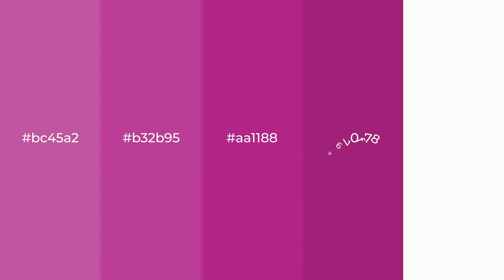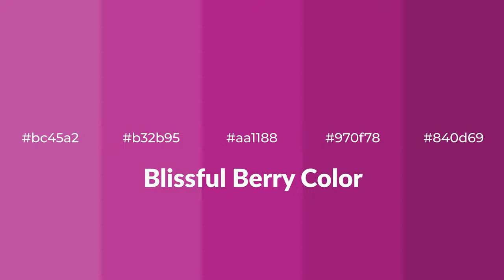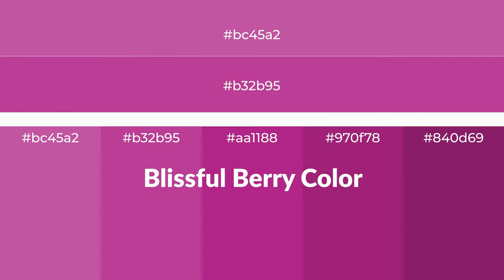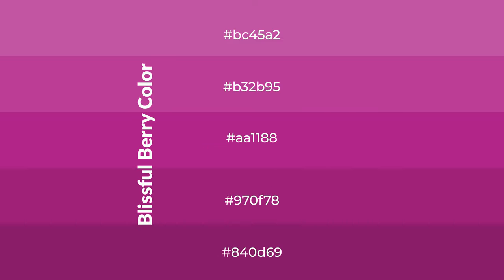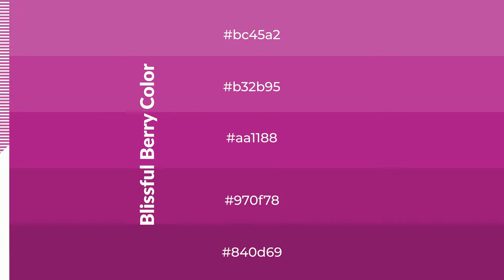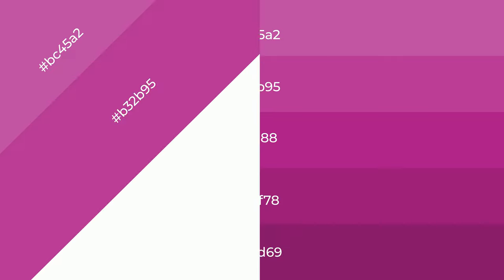Warm shades of Blissful Berry color with red hue for your next project. To generate tints of a color, we add white to the color. Tints create light and exquisite emotions. To generate shades of a color, we add black to the color, and it is used in patterns, 3D effects, and layers. Shades create depth and drama.